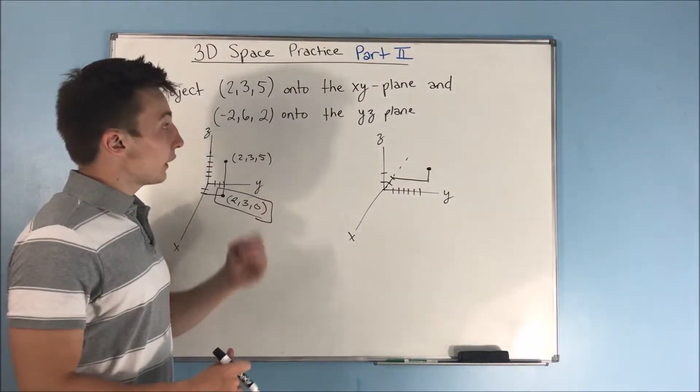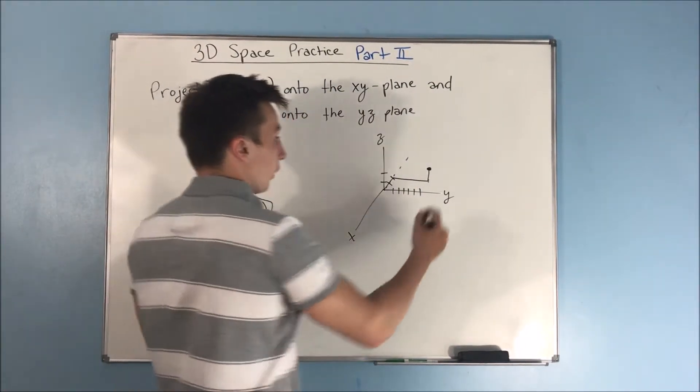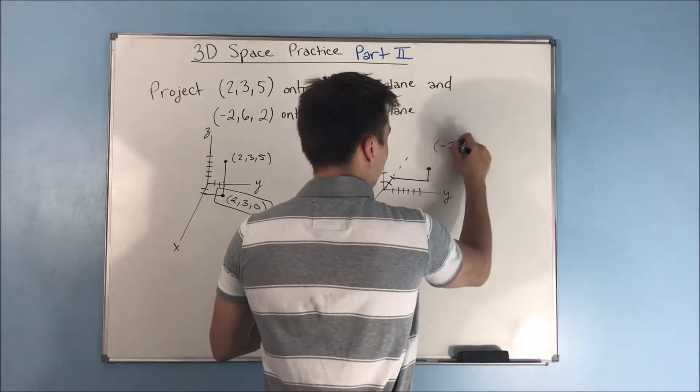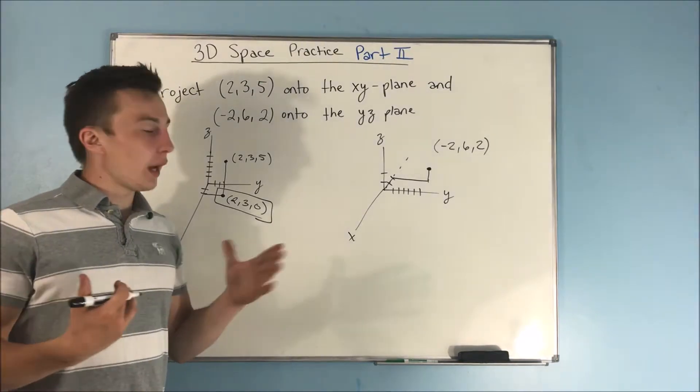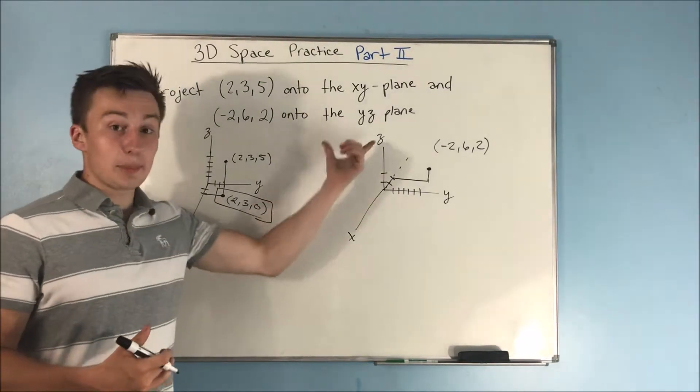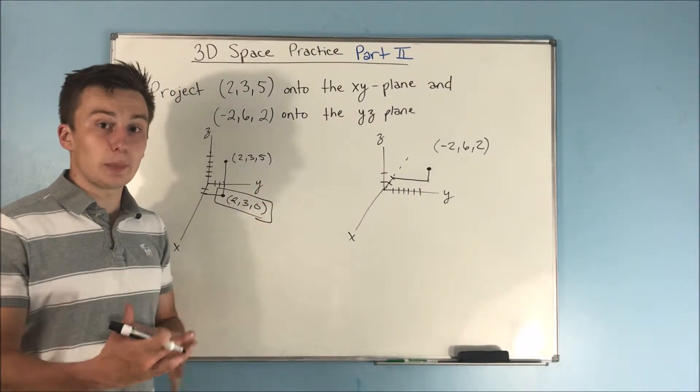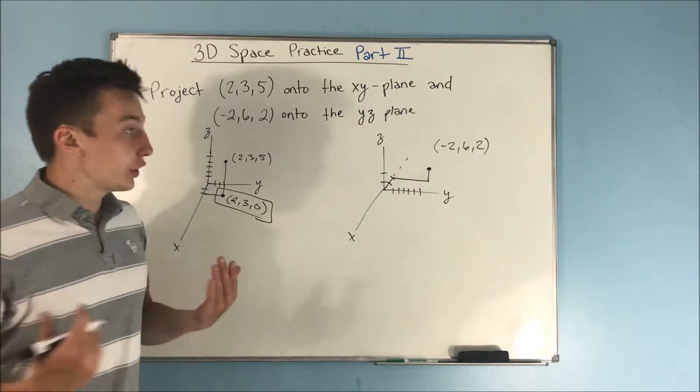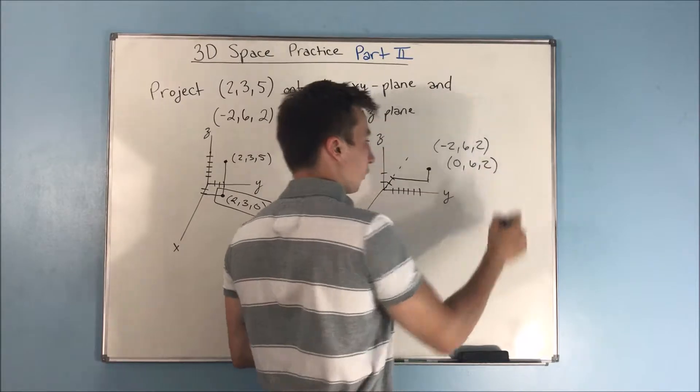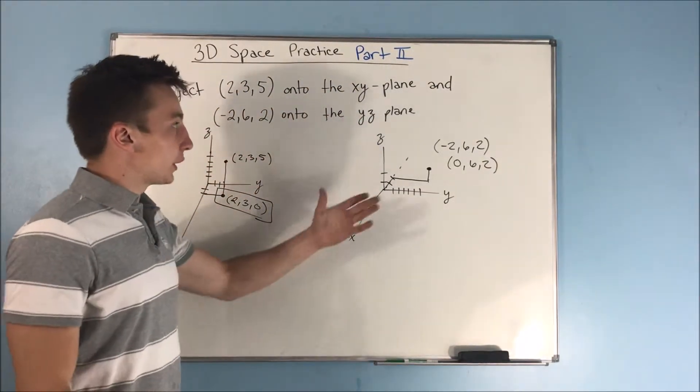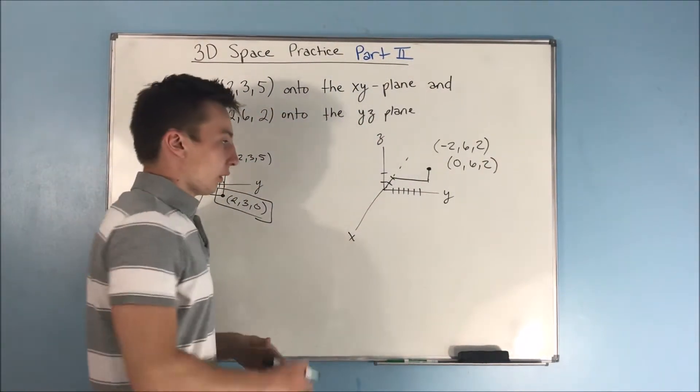So if we're projecting this onto the YZ plane, well, we start off with that point, (-2,6,2). And now, well, there's no X direction, because now it's just a plane, a YZ plane. It's a two-dimensional plane. There's no X involved. So your X becomes 0. There is no X dimension. We're talking about a YZ plane.